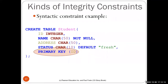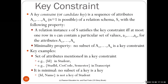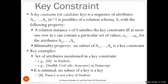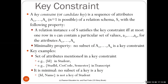A primary key is an integrity constraint specifying that the attribute ID must be unique for all tuples in the table. A key constraint — also called a candidate key — is a sequence of attributes a1 through an with the property that no two rows in the relation instance can have the same values for those attributes. There is also a minimality property: no proper subset of a1 through an is also a key, which distinguishes a candidate key from a super key.